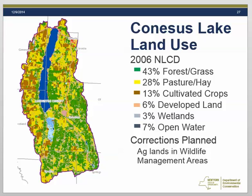Wetlands and open water make up the remaining 10% of the watershed. At the south end of the lake is the New York State Wildlife Management Area. Some of those lands are showing up as agricultural, and we are working with our Region 8 office to reclassify them to better reflect how they are actually used.